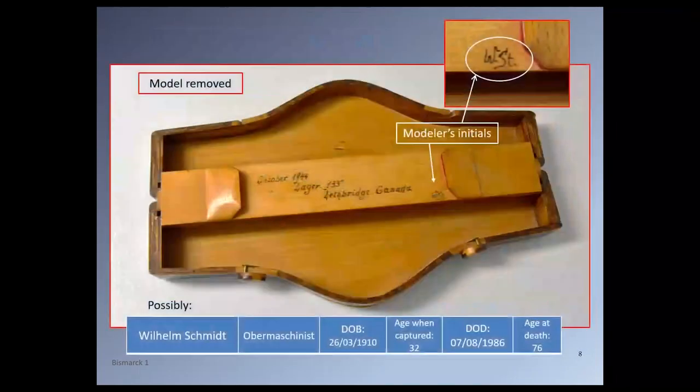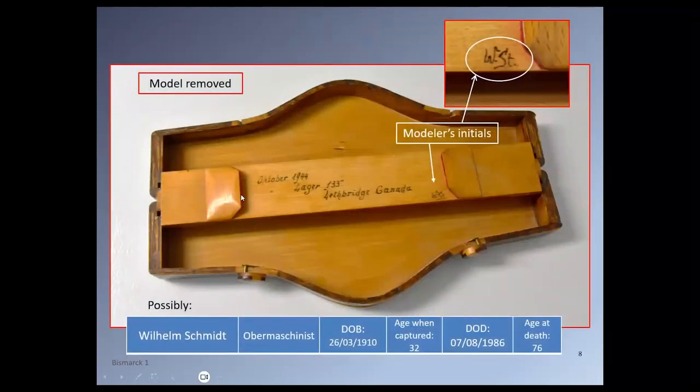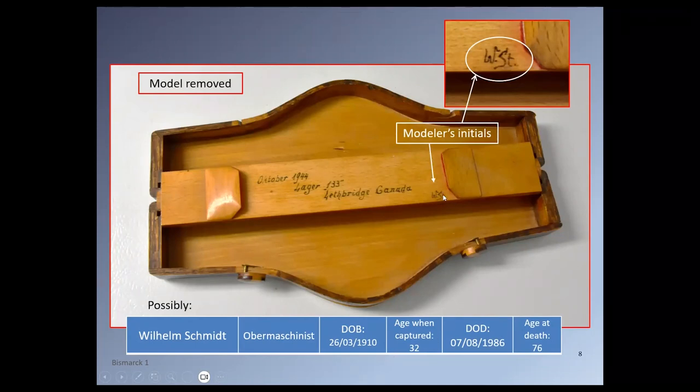Writing under the sub-base is the date 1944, just here, and the model maker's initials, that one there enlarged here, WST. A review of the list of 115 survivors of the sinking of Bismarck suggests that WST may have been a crew member named Wilhelm Schmidt, a lead machinist.